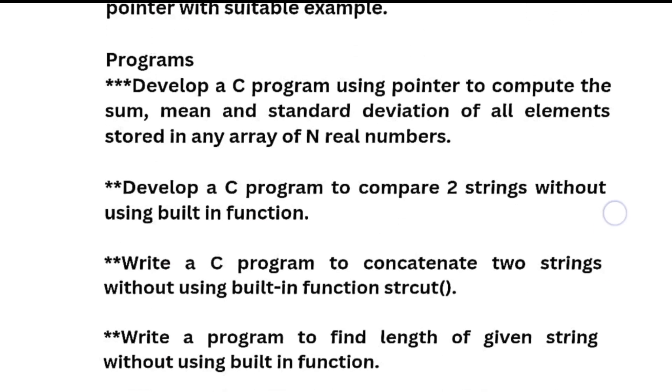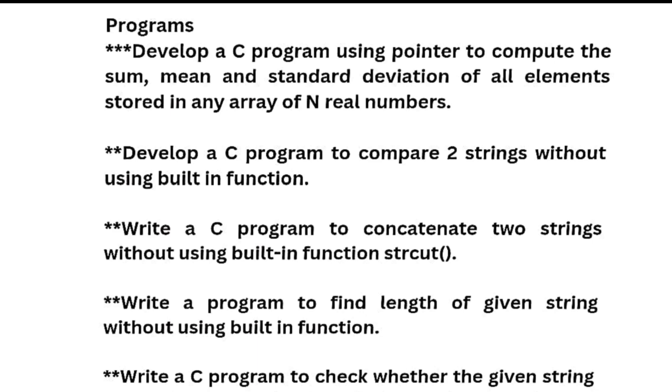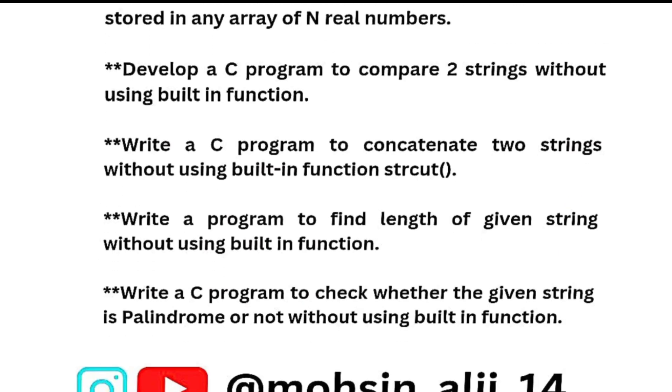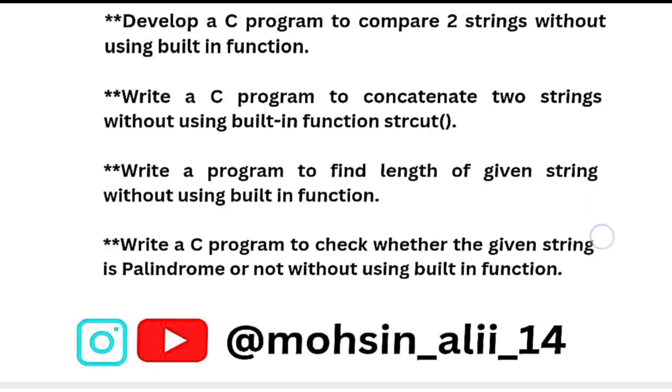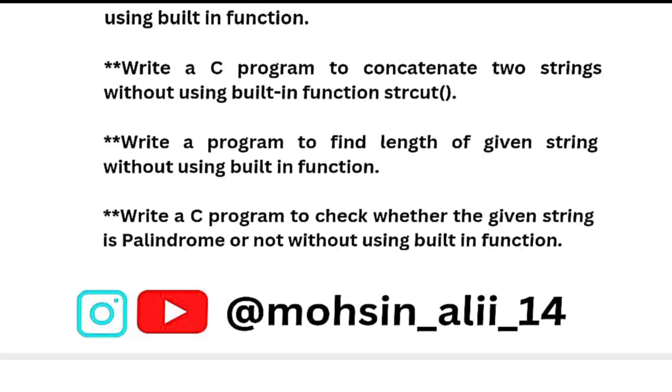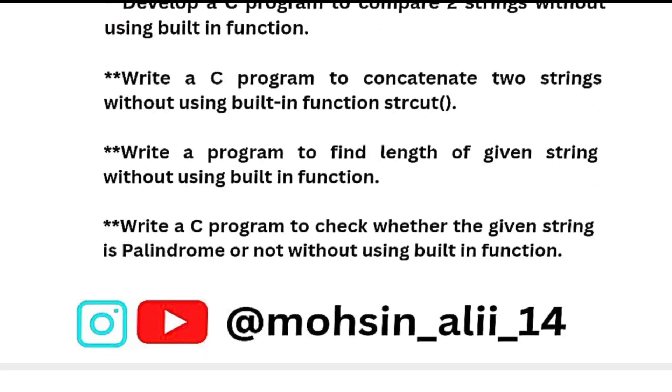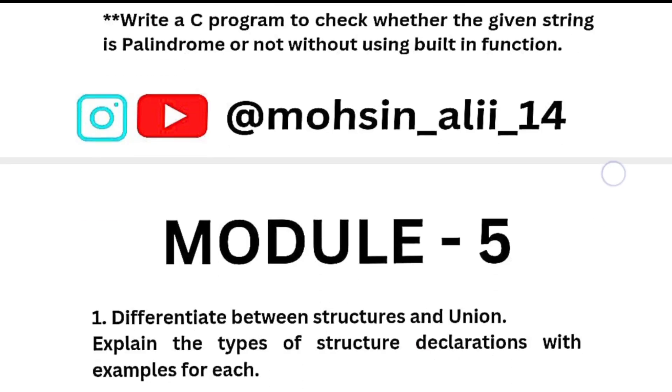These are the theoretical questions from module 4. Now coming to programs, we have super important ones like develop a C program using pointer to compute the sum, mean, and standard deviation of all elements stored in an array of n real numbers. Develop a C program to compare two strings without using built-in function. Write a C program to concatenate two strings without using built-in function. Write a program to find length of given C string without using built-in function. Last one: write a C program to check whether the given string is palindrome or not without using built-in function. These are some programs which are most important ones. If you are covering this much portion you will easily score in the subject.